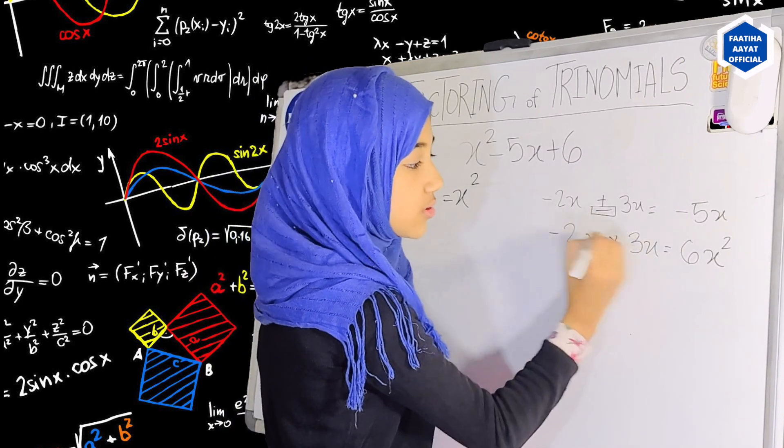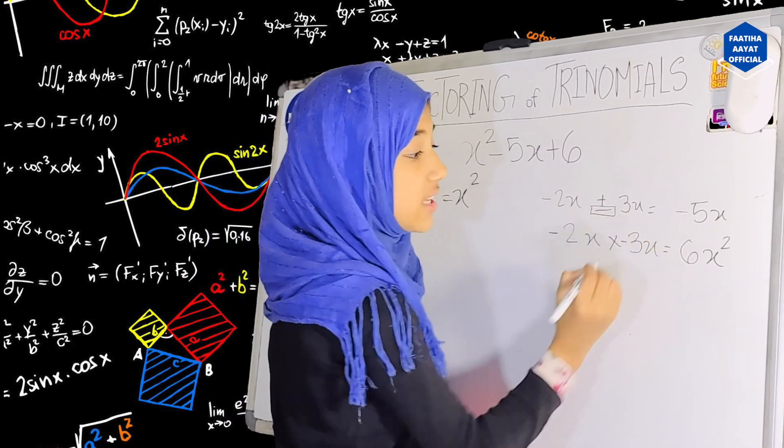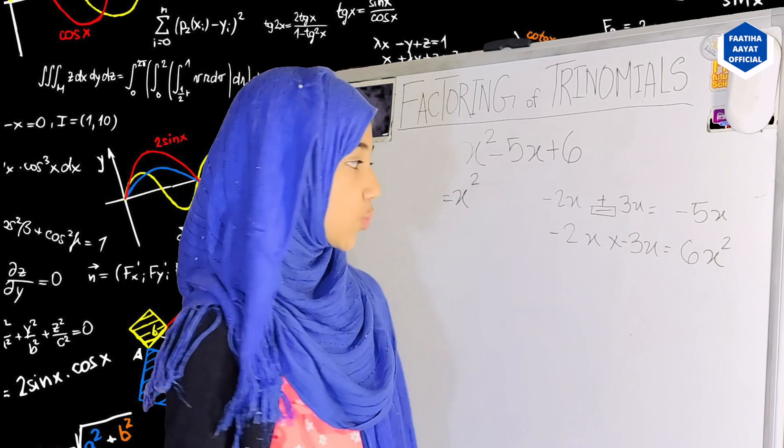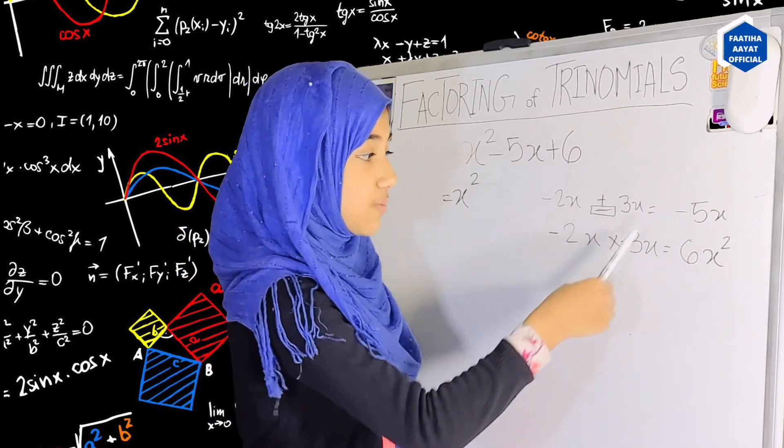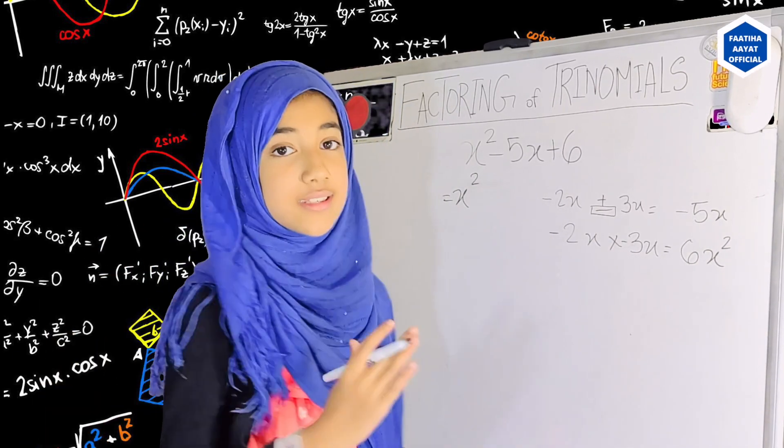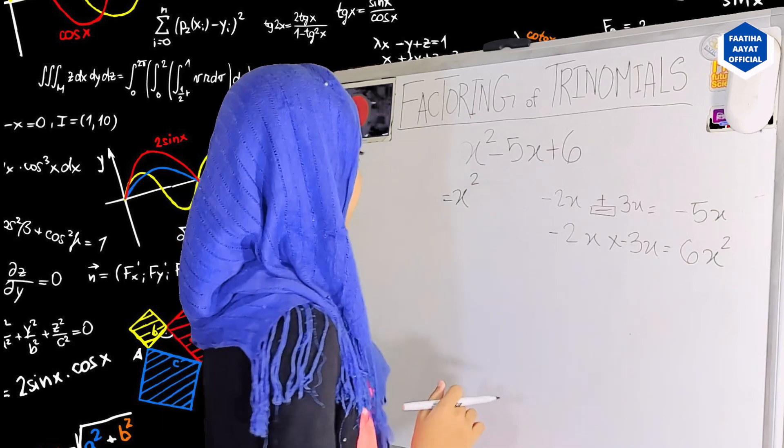Now minus 2x times minus 3x is 6x squared, because minus times minus is plus and 2x times 3x is 6x squared. So it works out! Perfect! Alright! Let me just erase this.